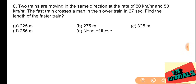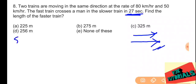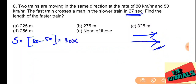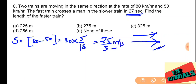Problem number eight: two trains moving in the same direction at 80 kilometers per hour and 50 kilometers per hour. The faster train crosses a man in the slower train in 27 seconds. Find the length of the faster train. Since they move in the same direction, we subtract: 80 minus 50 equals 30 kilometers per hour relative speed. Converting to meters per second by multiplying with 5 by 18 gives 25 by 3 meters per second.